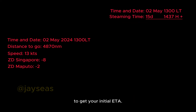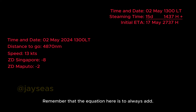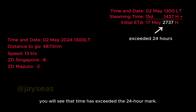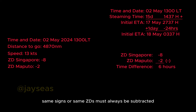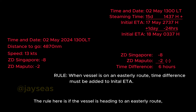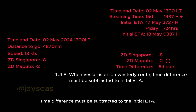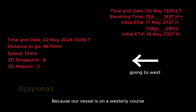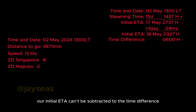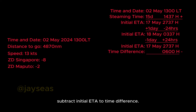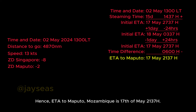Now add your steaming time to your local time to get the initial ETA — always add. You'll see that time has exceeded the 24-hour mark, so subtract 24 hours and add one day to the date. For same signs, ZDs must always be subtracted to get the time difference: 8 minus 2 is 6 hours. If the vessel heads easterly, add the time difference to initial ETA; if westerly, subtract it. Since our vessel is on a westerly course, we subtract. Borrow from the date if needed. Hence, ETA to Maputo, Mozambique is 17th of May, 2137 hours.